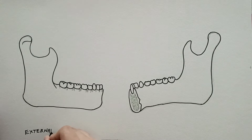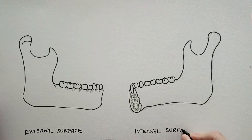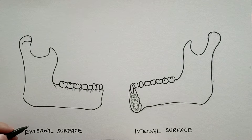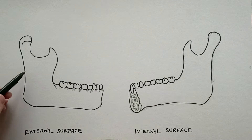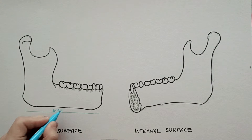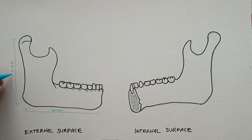We will draw the features of the mandible, visible on its external surface and internal surface. We will start with its external surface. It presents two parts: the horizontal part or the body of mandible, and the vertical part or the ramus of mandible.